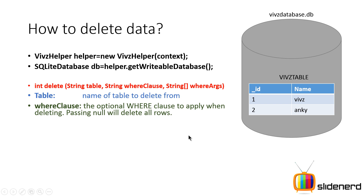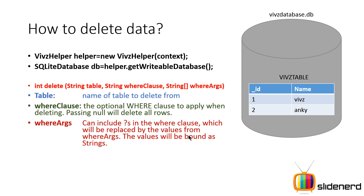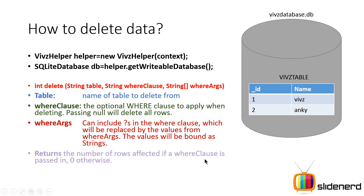There are also WHERE arguments. For example, in the SELECT query you had something like SELECT * FROM table_name WHERE name = 'Vips'. In the WHERE clause you'd write name equals a question mark, and in the WHERE args you supply the value 'Vips' inside a string array. That is how the WHERE clause and WHERE args work together. The delete method returns the number of rows affected when a WHERE clause is passed, or zero if nothing changed.